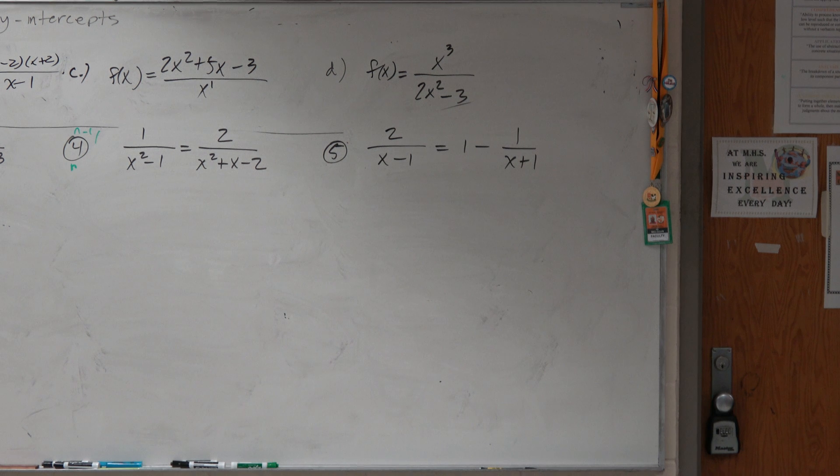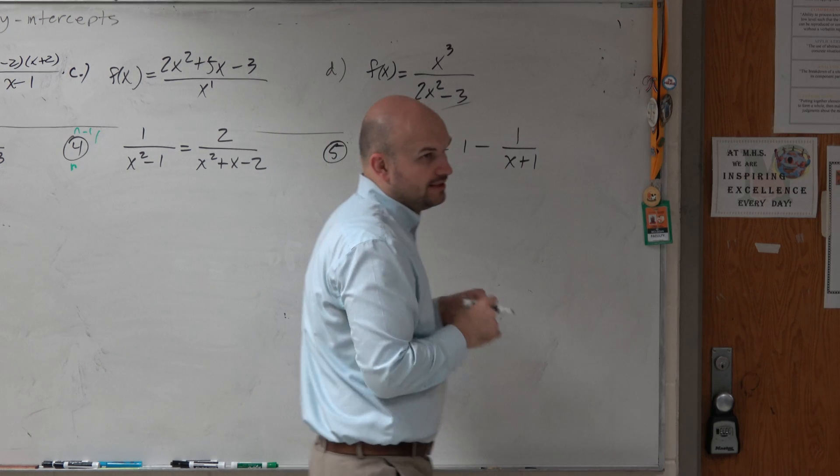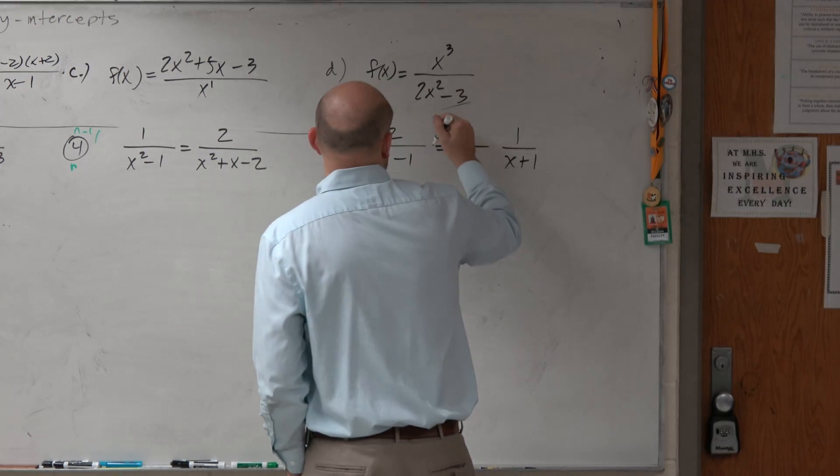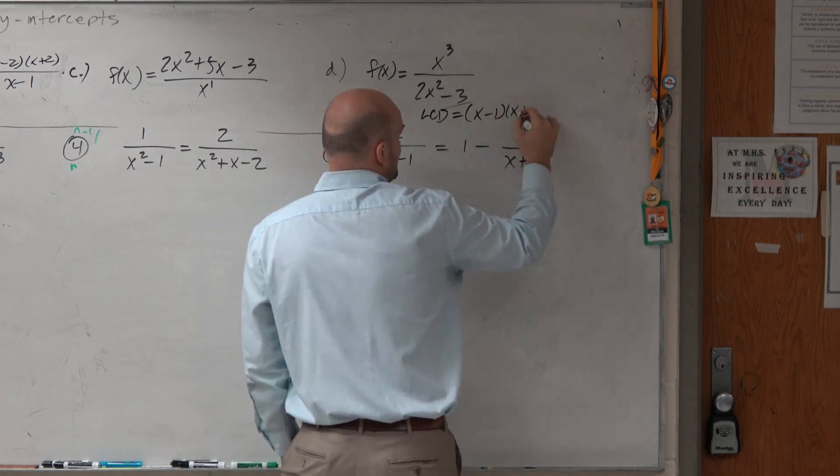So in this example, guys, what I'm going to do is I identify I don't have the same common denominator. So I'm going to find the product of them is going to be my LCD. My LCD is just basically x minus 1 times x plus 1.